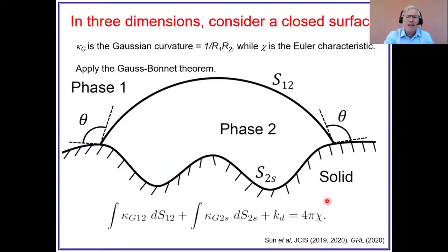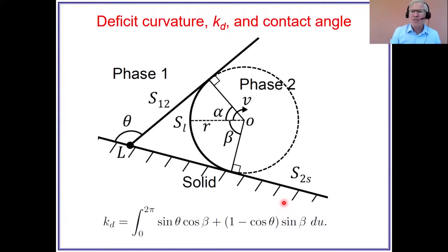But if we've got a contact with a surface and imagine this is phase one water and this is the contact angle, then there is an additional term because it's no longer smooth. There's a kink, isn't there? So we have to include that and that's included in the deficit curvature and maybe that deficit curvature is related to contact angle. Well of course it is.